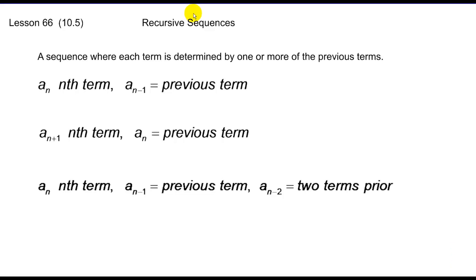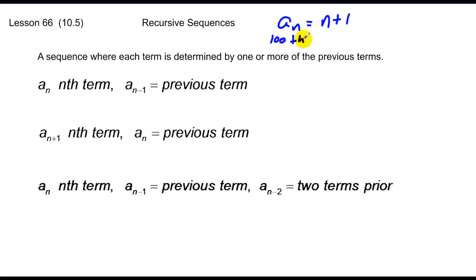Today we discuss recursive sequences. The biggest difference between a recursive sequence and the sequences we've been dealing with is when we write an equation for a sequence to describe its nth term — for instance, a sub n equals n plus 1. If I want the hundredth term, I plug in 100, so a sub 100 equals 100 plus 1, or 101.